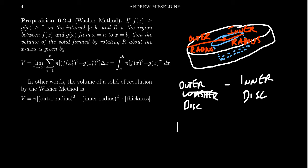The outer disk has a volume of pi times outer radius squared times its thickness, we'll call it delta x. And then we subtract from that pi times the inner radius squared times the thickness, again we'll call it delta x.